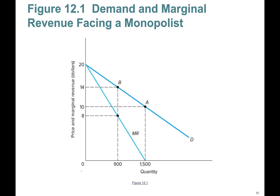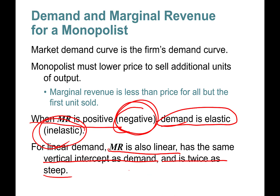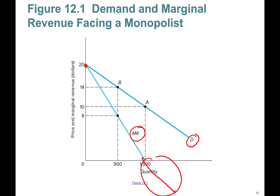For a linear demand curve, marginal revenue is also linear, has the same vertical intercept, and is twice as steep. The marginal revenue curve starts from the same intercept and can become negative — when demand is inelastic MR is negative, when demand is elastic MR is positive. Remember: positive MR means elastic demand, negative MR means inelastic demand, and MR can take on negative values.